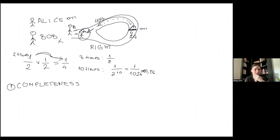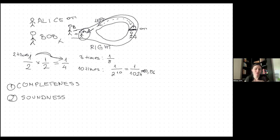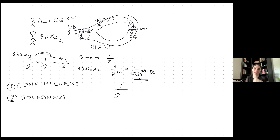The second principle is soundness. Soundness means that if a statement is false, no cheating prover can convince an honest verifier that the statement is true — except with a very small probability, like the 0.1% we calculated. After hundreds of rounds it would be nearly impossible, because we'd have 1 divided by 2 to the power of 100, which is an insanely large denominator.